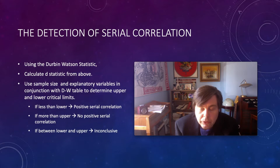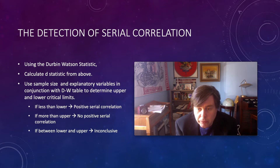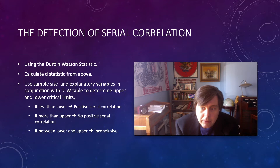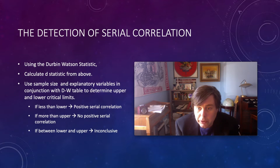The Durbin-Watson statistic is given by the expression shown here and will vary between zero and four. In your regression output, that value tells you something about the possibility and nature of serial correlation. However, the number alone isn't enough to tell you where you stand — to determine the extent of serial correlation, you need additional information.